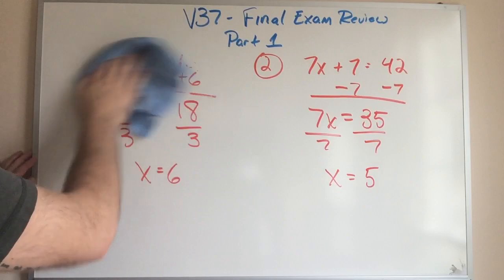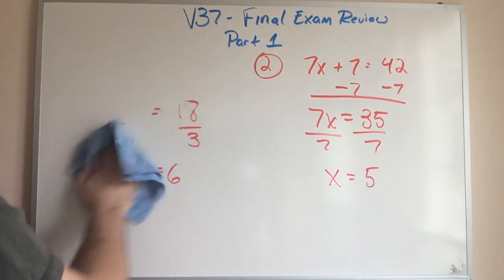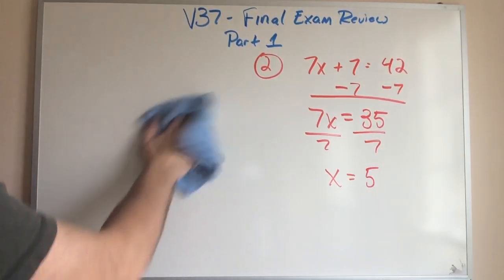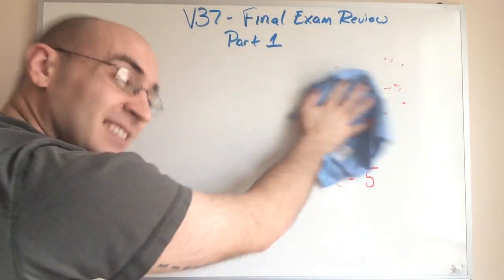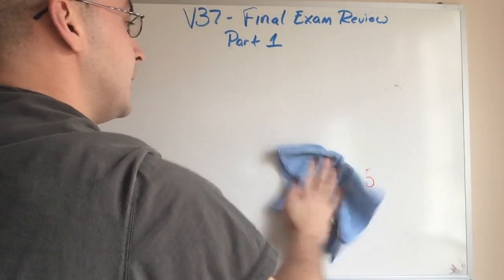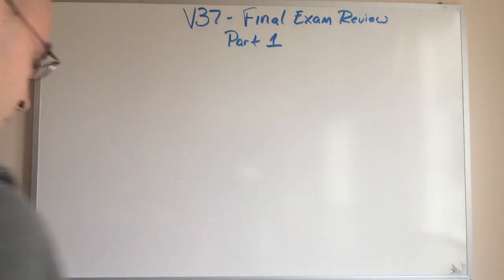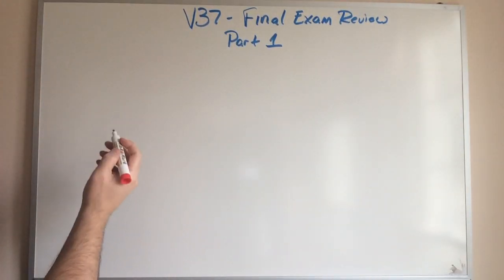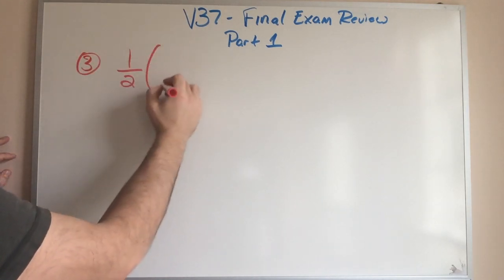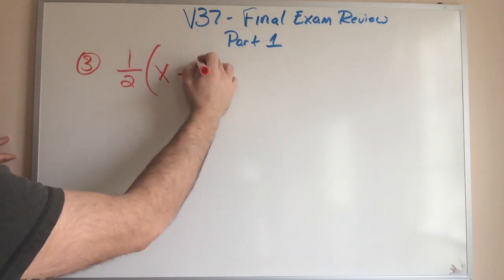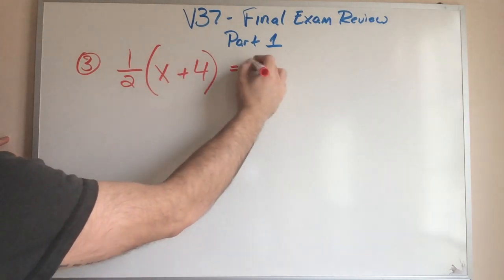Now the problems that we need to do a little bit better on are ones with fractions. Fractions aren't all that bad. It just means you might have a fraction answer, right? Because that's going to be a little bit weird, but that's okay. So let's work on one or two. Number three, let's go with one half times the quantity X plus four equals 20.